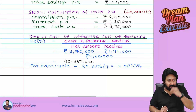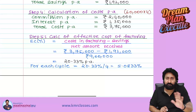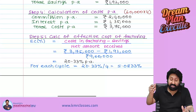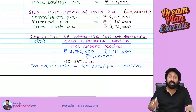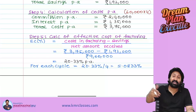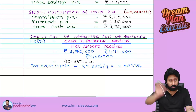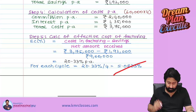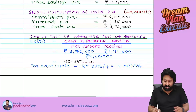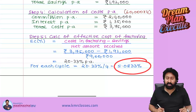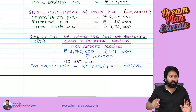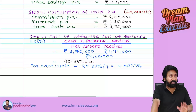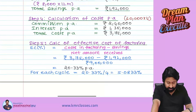So 20.33% is the net cost to the company for factoring. If the bank interest rate is 18% or 16%, go with bank financing. If the bank rate is 21% or 22%, factoring is better. This step-by-step approach is how factoring questions must be solved in the exam.